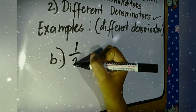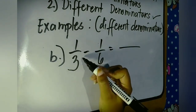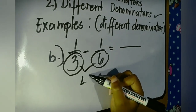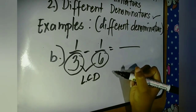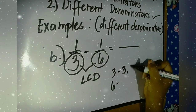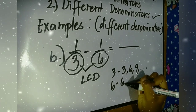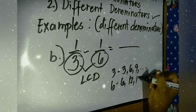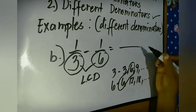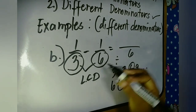Let's have Example B: one third minus one sixth. The denominators three and six are different from each other. The factors of three are three, six, nine, and so on. The factors of six are six, twelve, eighteen, and so on. The LCD is six.